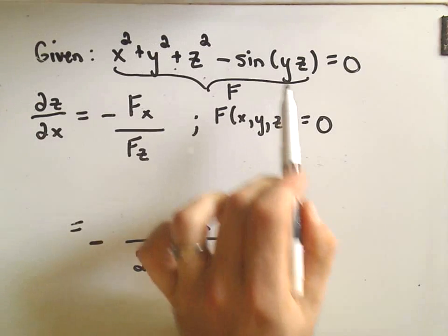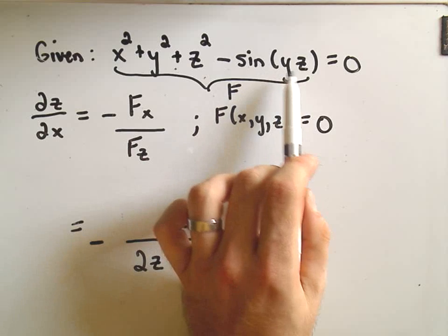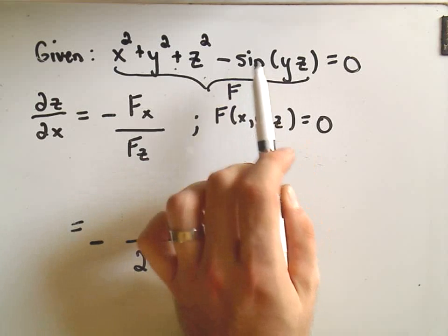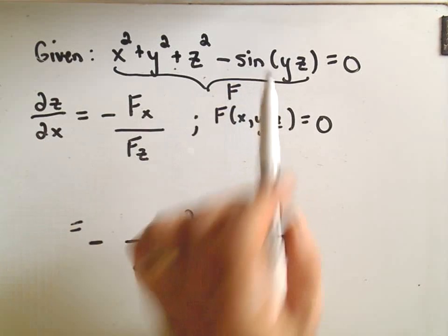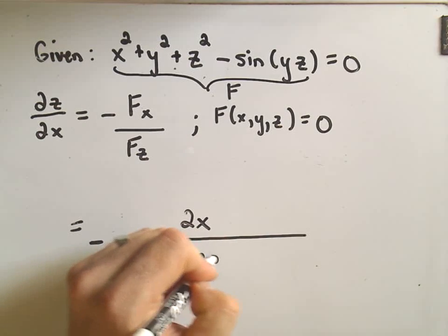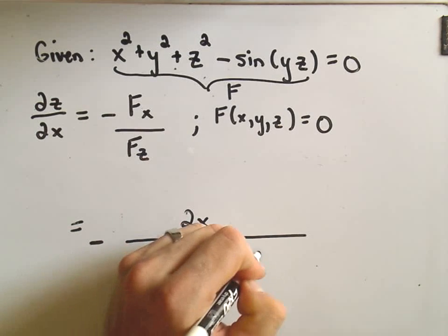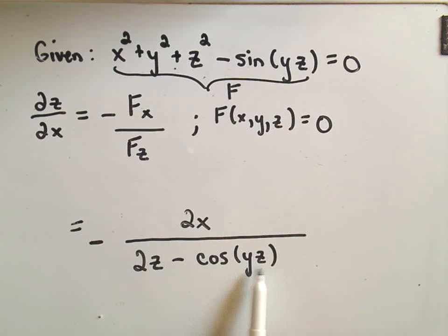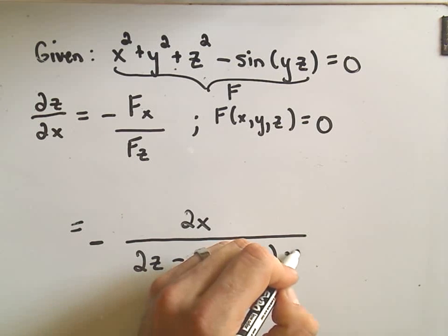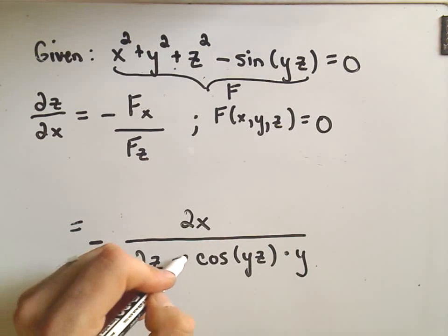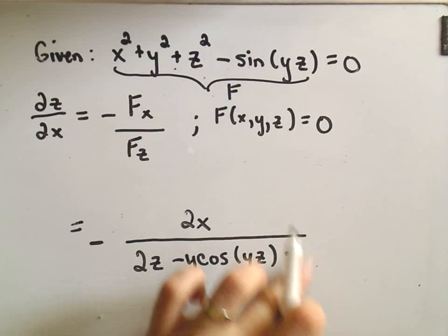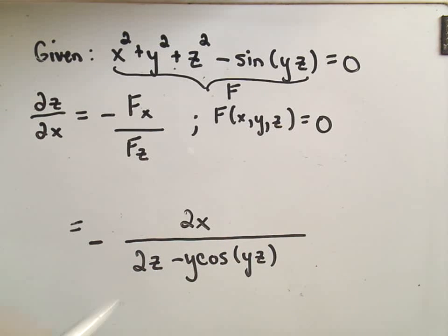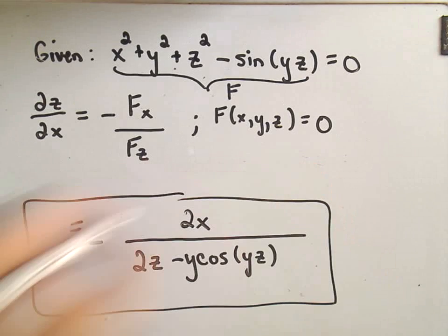And then we just have to take the derivative of the sine of yz and we'll have to use the chain rule. So again, the derivative of sine is simply cosine. We leave the inside alone. Again, we're taking the partial derivative of the inside with respect to z, which means y is like a constant, so the derivative of the inside part will simply be y. And I'm going to pull that out front. Okay, so there's one of our partial derivatives now.